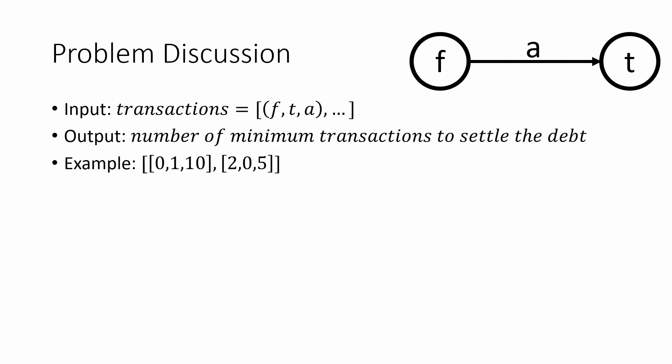The input given to us is a list of transactions, and each of these transactions is a tuple of (from, to, amount), which says that from node 'f' we give out 'a' money to node 't'. The output the problem expects is the number of minimum transactions required to settle the debt — in other words, we're trying to minimize the number of transactions between people.